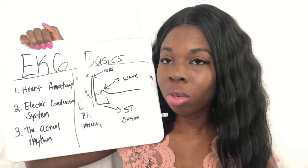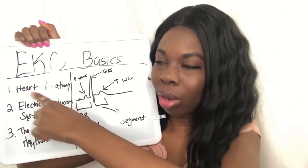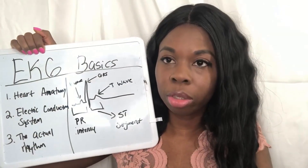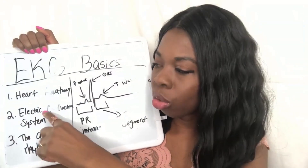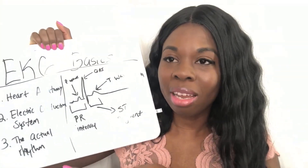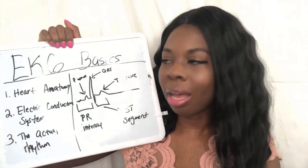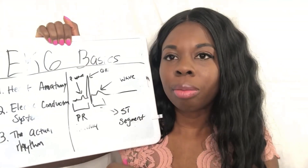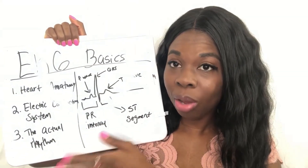There are three main things that you need to know when it comes to EKGs. Number one is the heart anatomy — understanding the actual anatomy of the heart. Number two is the electrical conduction system, and I'll get into what that is exactly. And then number three is to know the actual rhythm — what each of the parts of the rhythm means and how to respond to it.